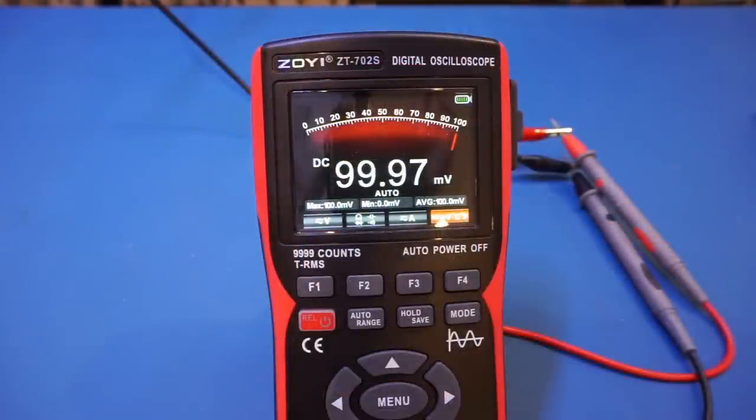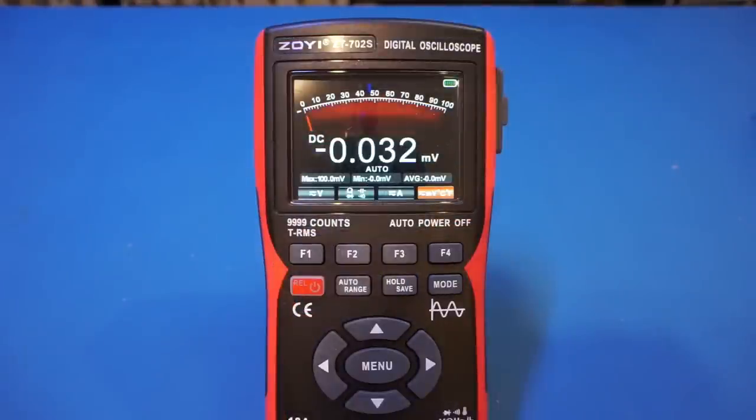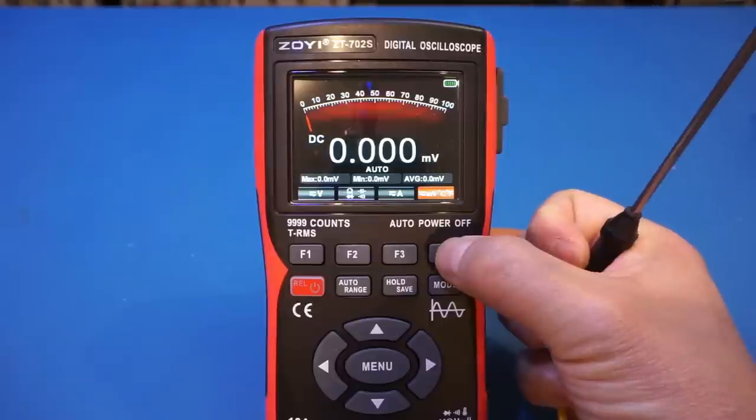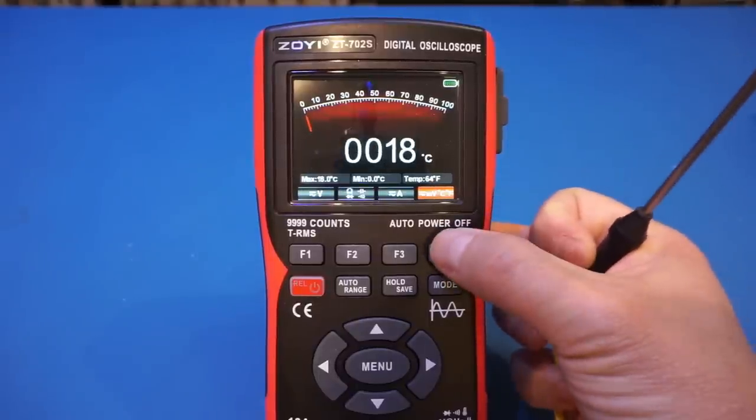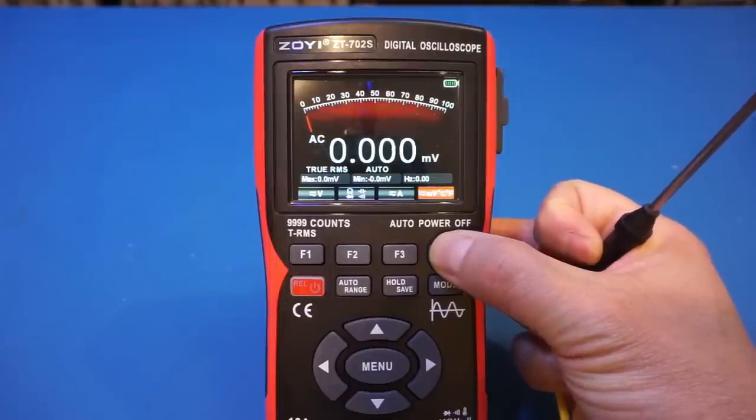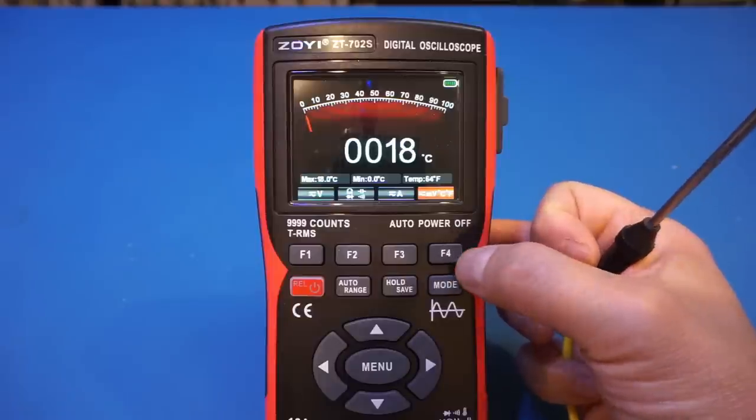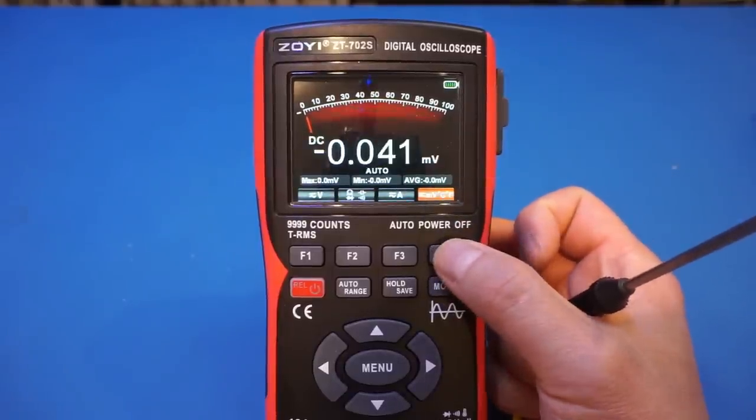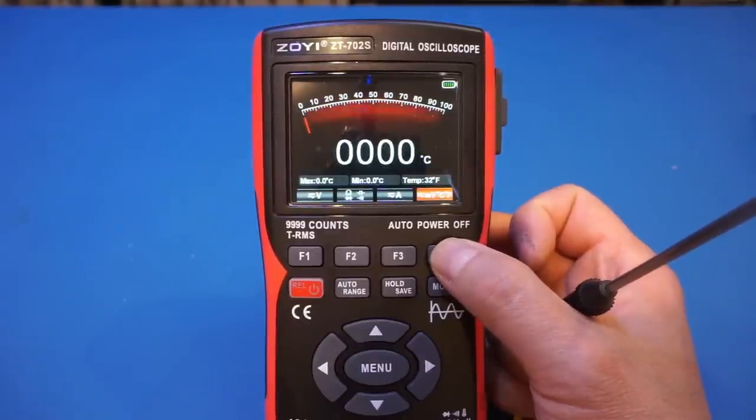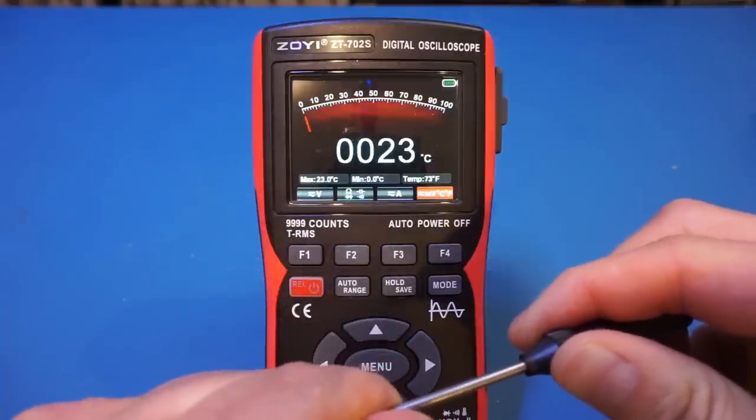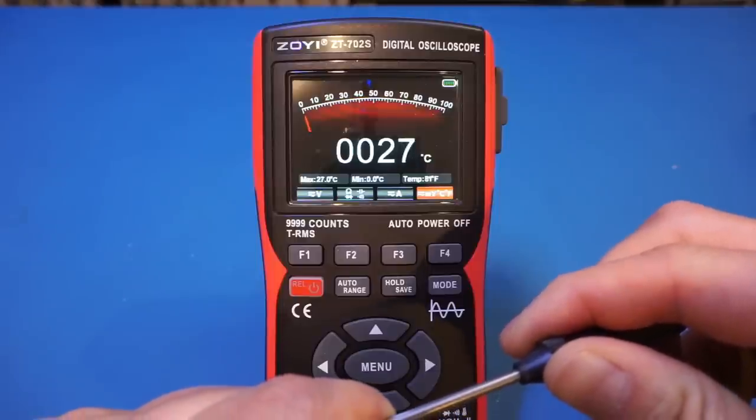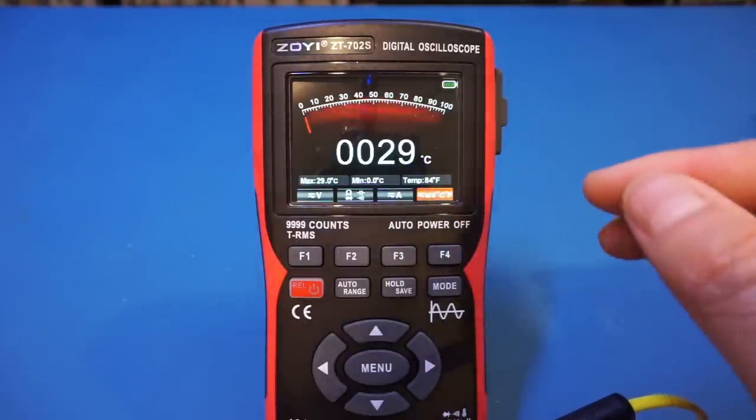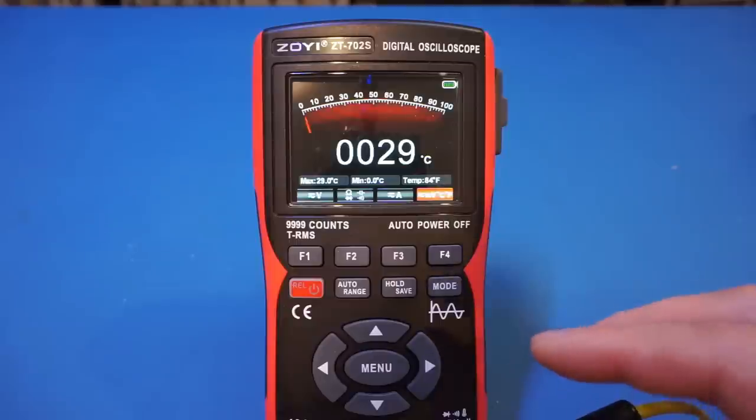And of course, with the supplied thermocouple, you can use this range to measure the temperature as well. So let's switch to temperature measurement. It doesn't seem I'm able to get to Fahrenheit. Huh, that's interesting because it certainly says F there. Oh, the temperature reading actually has both Celsius and Fahrenheit. Fahrenheit is in this small print, but I would have expected we could use the range button to actually switch to actual display to Fahrenheit, but not a big deal.